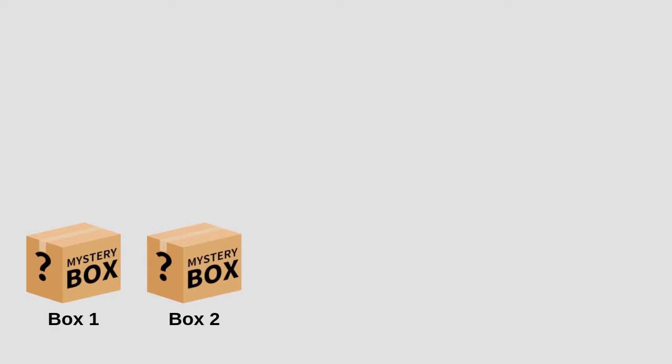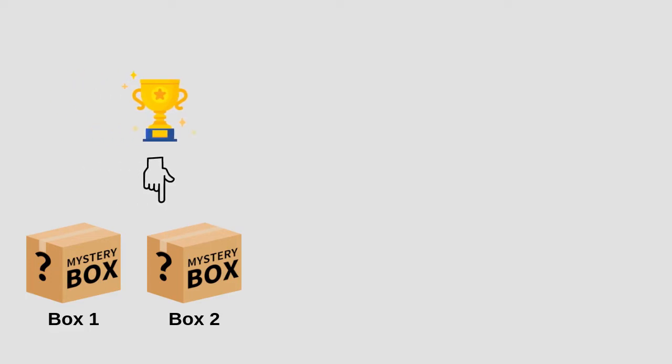Let's see an example with a probability of 0.5. Imagine there are two mystery boxes: box one and box two. In one of the boxes there is a prize, and the other box is empty, and you are told to pick one box. If you choose the box that contains the prize, you win. If you choose the empty box, you get nothing. What is the probability of choosing the box with the prize?